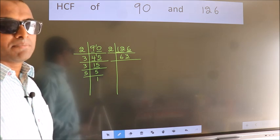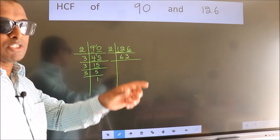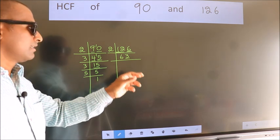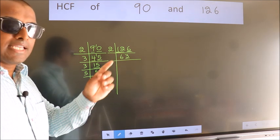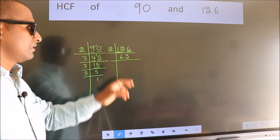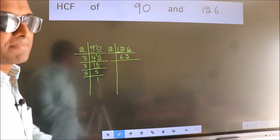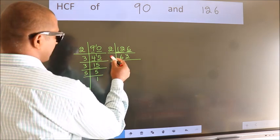To check divisibility by 3, we should add the digits. 6 plus 3, we get 9. Is 9 divisible by 3? Yes. So this number is also divisible by 3. Take 3.